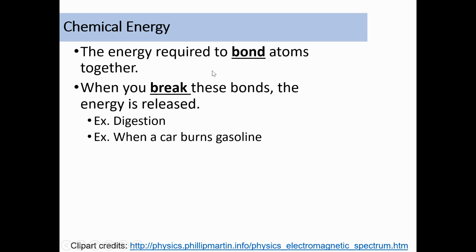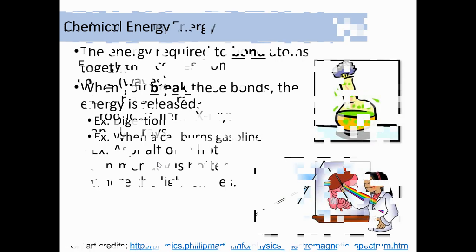Alright, and we have chemical energy. So chemical energy requires the bonds of atoms together. So when we break these bonds, things are released. So this happens when the car burns gasoline. So gasoline is this long molecule of a bunch of carbons, a bunch of hydrogens. And you'll learn more about that next year. And when those bonds kind of get disturbed and interrupted, it releases energy. Digestion is also a way that this works. So your stomach acid is breaking down your food.